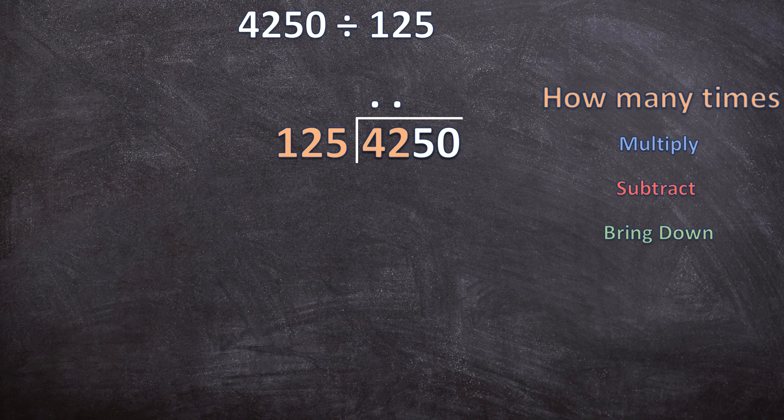And now I include the next digit. How many times can 125 go into 425? And now we have an answer for that. We can take 125 out of 425. And how many times can we take 125 out of 425? Three times.